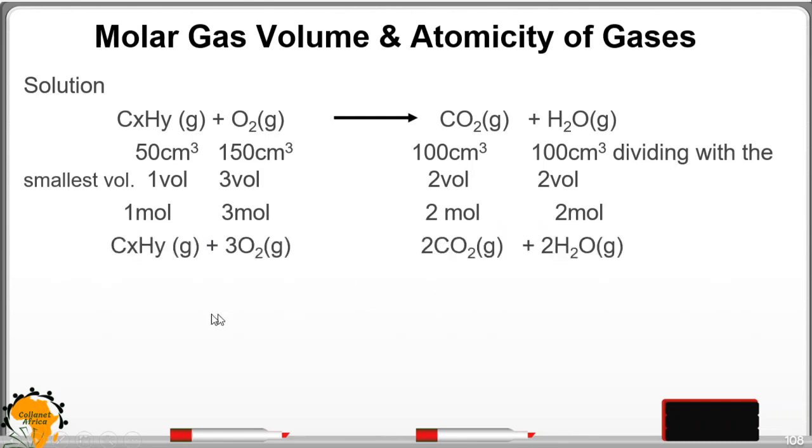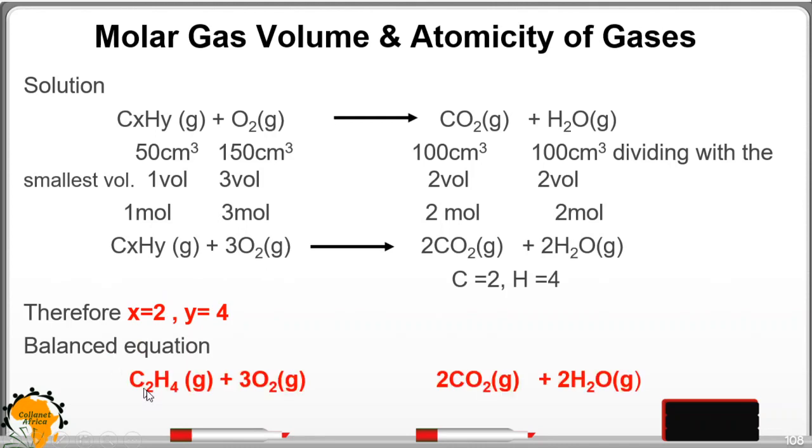The equation will be written this way, we get the moles, and we put in our equation. Since this equation is balanced, then it will be found that on this side of the product, we have four hydrogen. Therefore, we have to make this one four. This implies that Y will be four, and carbon will be two. The balanced equation will be written that way, and that is the answer.